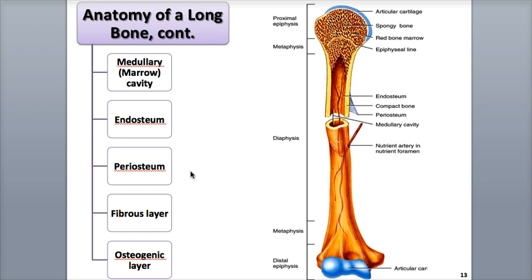Surrounding most of the bone's surface is a tough protective covering of connective tissue and blood vessels called the periosteum, which means around the bone. It is attached to the bone by thick bundles of collagen proteins called perforating fibers, also referred to as Sharpey's fibers. The periosteum is made of an outer fibrous layer consisting of dense irregular connective tissue and an inner osteogenic layer made of bone-forming cells that allow the bone to grow in thickness. In addition to protection, the periosteum provides attachment sites for tendons and ligaments, helps supply nutrients to bone tissue, and helps repair damaged bone.